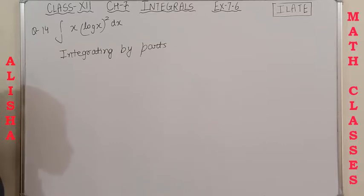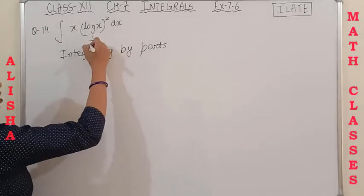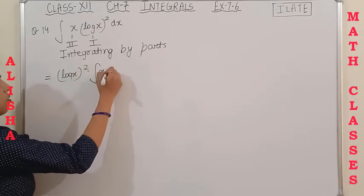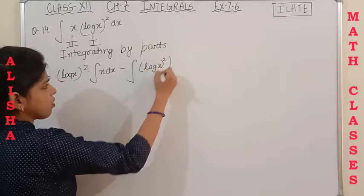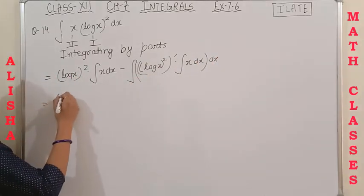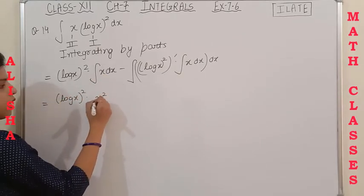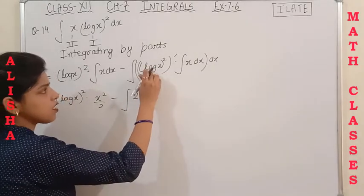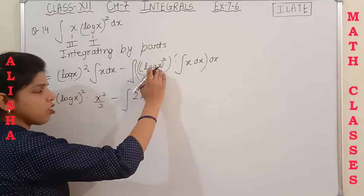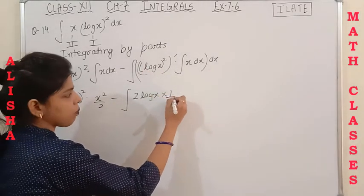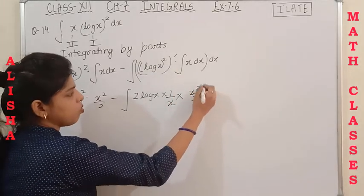Question 14 is the integration of x·(log x)². Integrating by parts with (log x)² as the first function and x as the second function. The integration of x is x²/2. The derivative of (log x)² is 2log x · (1/x) by the chain rule. So we get (x²/2)·(log x)² − ∫(x²/2)·(2log x/x) dx = (x²/2)·(log x)² − ∫x·log x dx.